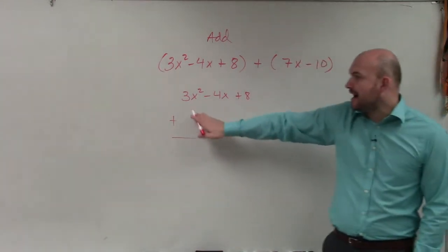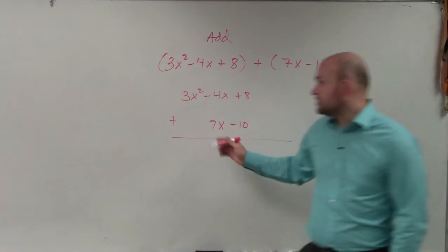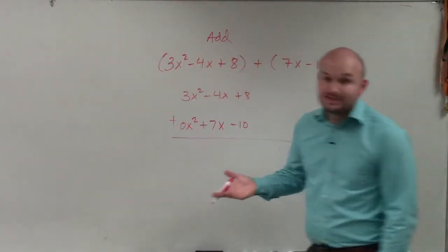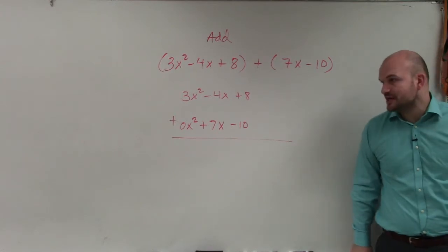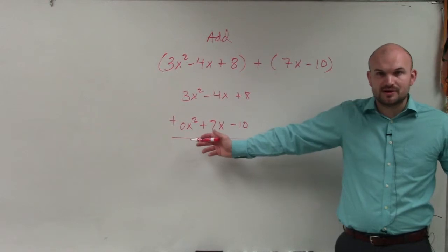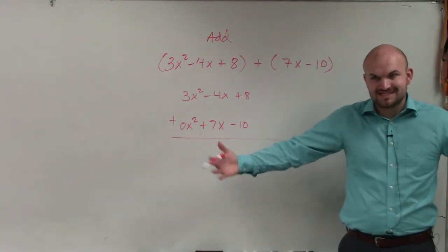And then you can just add vertically. Now, obviously, I have nothing to add to my 3x². You could think of this as a 0x² if you guys wanted to. When I was first teaching that, that's what I showed you guys you can do. You can always input 0x² because what's 0 times x²? Zero.